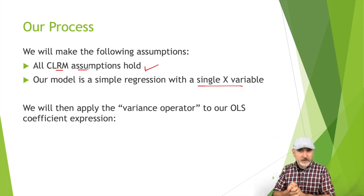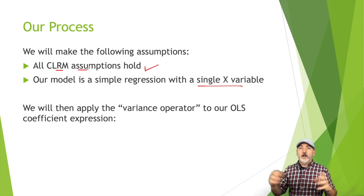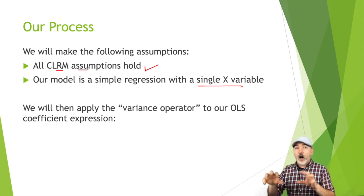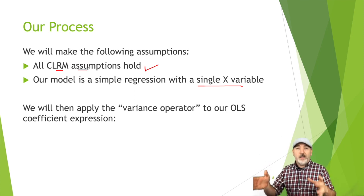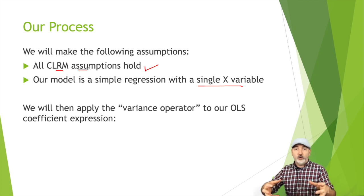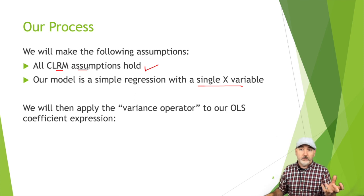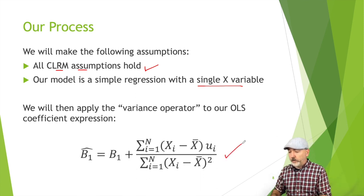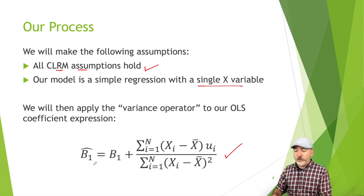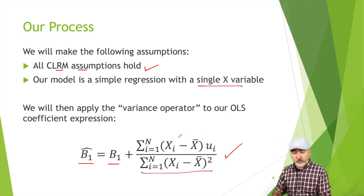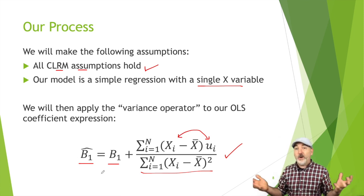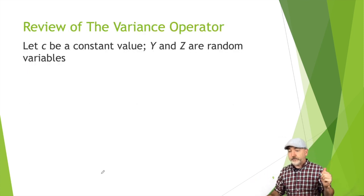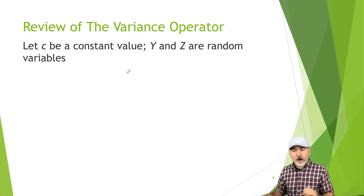Just as we applied the expectation operator to the B1 hat formula to prove unbiasedness, we're now going to apply the variance operator to that same formula. Think of the variance operator as a mathematical function we can apply to a variable — we're going to apply it to our B1 hat formula derived last time. That formula was what we used to show OLS was unbiased: on average B1 hat equals B1, with all additional terms disappearing if x and the error term are independent.